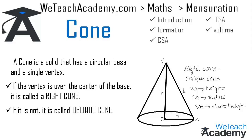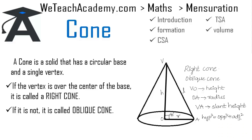By observing the cone we can see that VOA is a right angle triangle which makes 90 degrees at the vertex O. Using the Pythagoras theorem — hypotenuse square equals opposite square plus adjacent square — we can write L² = H² + R². So here we get the relationship between slant height, height, and the radius of the cone as L² = H² + R².